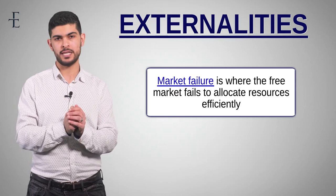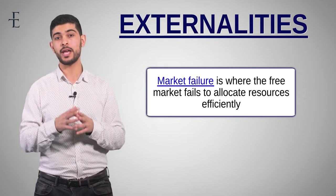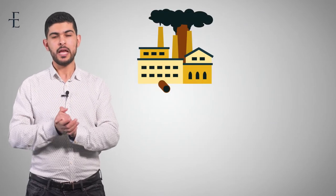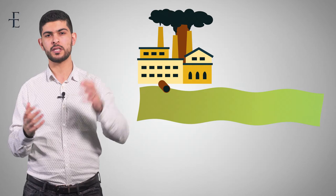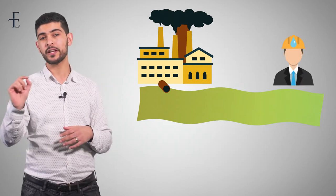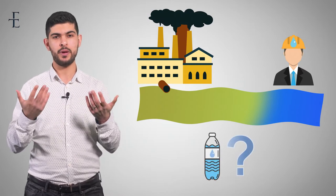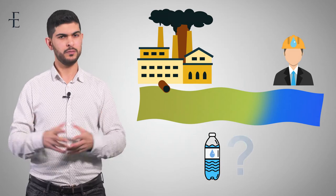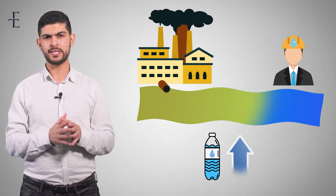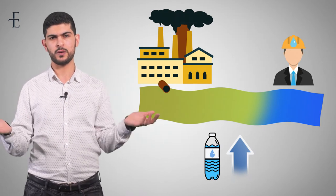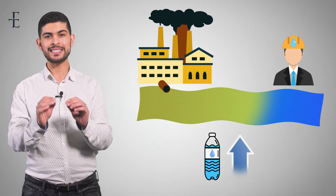Within market failure is a concept known as externalities. Before we define an externality, I want to take you through an example — and I want this example in the back of your mind every single time you hear the word externalities. Imagine a chemical company. The chemical company decides to dump its waste into a nearby river because it's cheaper than taking it to the appropriate sites. The water company now comes to extract water from that river, but they have to filter out all the excess waste. The price we pay for water is obviously going to go up, because the cost for the water company has gone up. And from a simple supply and demand perspective, when costs go up, supply shifts inwards and the price rises. The big deal is that none of it would have happened if it wasn't for the chemical company in the first place. That in essence is an externality.